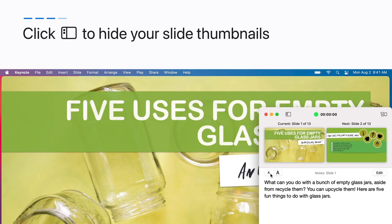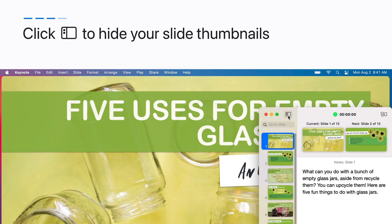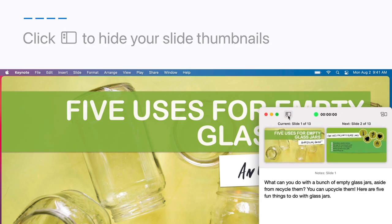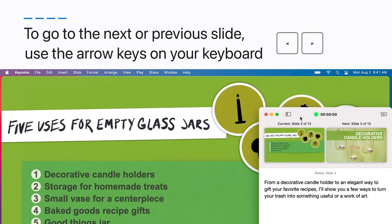The presenter controls appear in a separate window. You can show or hide your slide thumbnails by clicking the thumbnail button. To go to the next or previous slide, use the arrow keys on your keyboard.